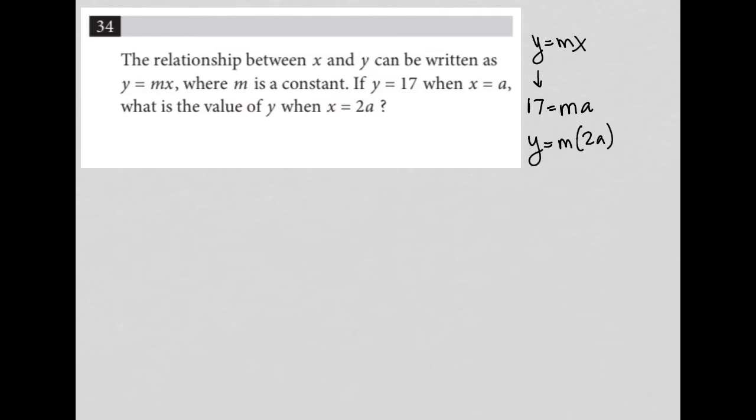So let's take an inventory of what we have. So we know that 17 is equal to m times a, right? We were told that y equals 17 when x equals a. So we just replaced y with 17, replaced x with a.